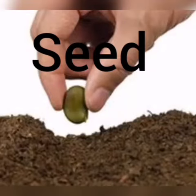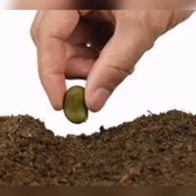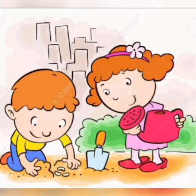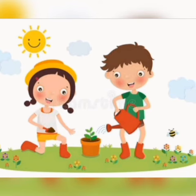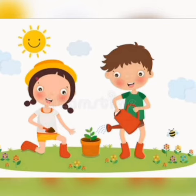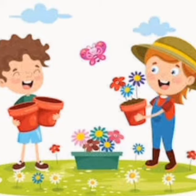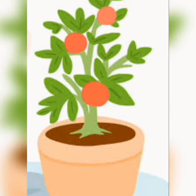One, two, three, start. Seed. A little seed for me to sow, a little earth for it to grow, a little hole, a little path, a little wild, a little sun, a little shard, a little air, a little wish and then a little flower for me to see, a little fruit for you to eat. Thank you.